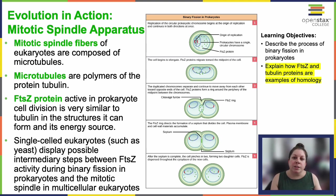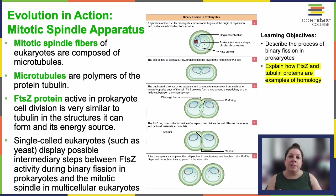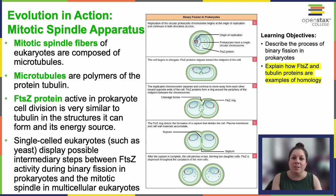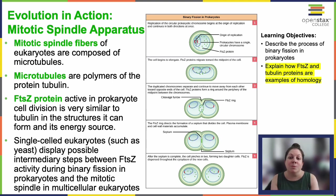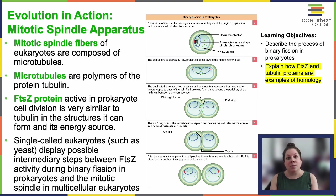FTSZ and tubulin illustrate something we call homology, indicating a common evolutionary origin. FTSZ is believed to resemble the ancestral protein from which both modern FTSZ and tubulin evolved. While both proteins exist in present-day organisms, tubulin has evolved significantly and diversified its functions since its prokaryotic FTSZ origins. Studying cell division machinery in unicellular eukaryotes today has provided a lot of insight into intermediate steps leading to the complex mitotic machinery we see in multicellular eukaryotes. That's why we study bacteria — we see all sorts of interesting things that give us a picture of what the earliest forms of some of these proteins might have looked like.